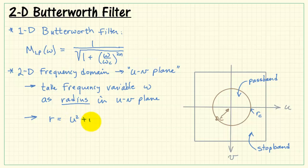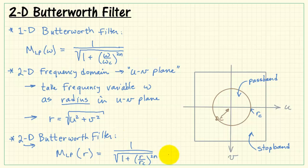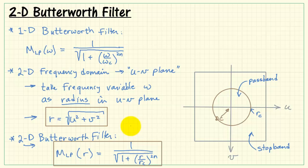Now the radius is simply the magnitude in the UV plane. That would be the U direction squared plus the V direction squared. We then swap omega for R, and that gets the two-dimensional Butterworth filter. This function then describes the two-dimensional filter using the frequency radius as defined here.